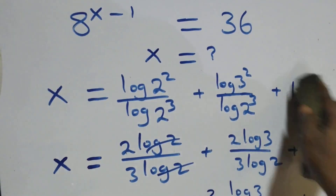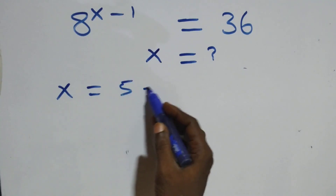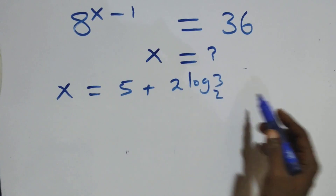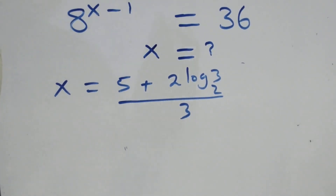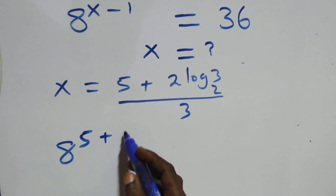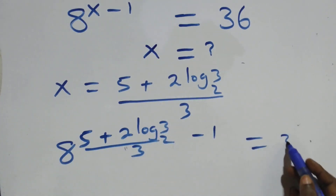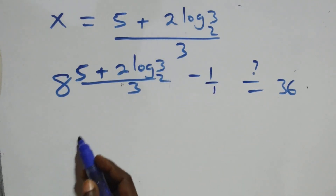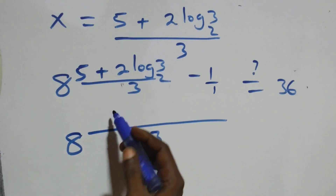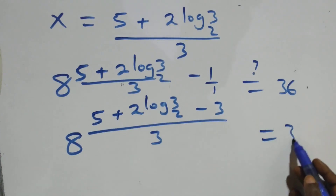Let's check whether this satisfies the given problem. We substitute x equals (5 + 2 log₂3) / 3 into the original equation. This gives 8 raised to power [(5 + 2 log₂3)/3 minus 1]. We bring the power together: the denominator is 3, and the numerator becomes 5 + 2 log₂3 minus 3. So 5 minus 3 equals 2, giving 8 raised to power (2 + 2 log₂3) / 3. Is this equal to 36?